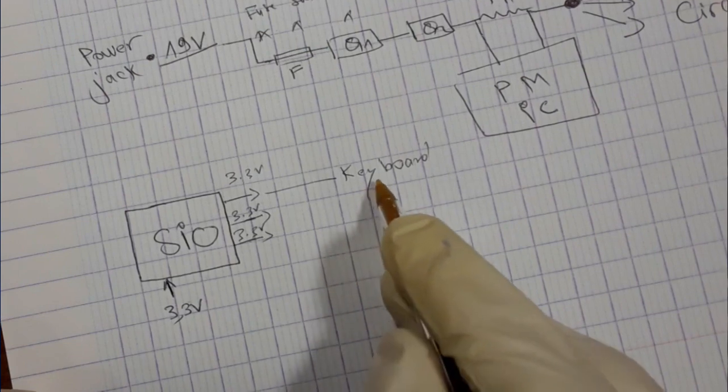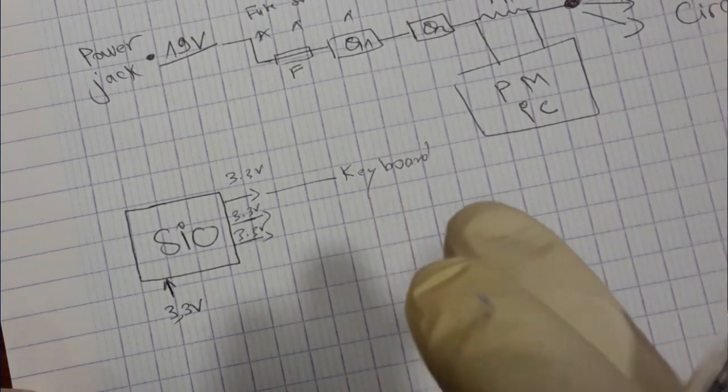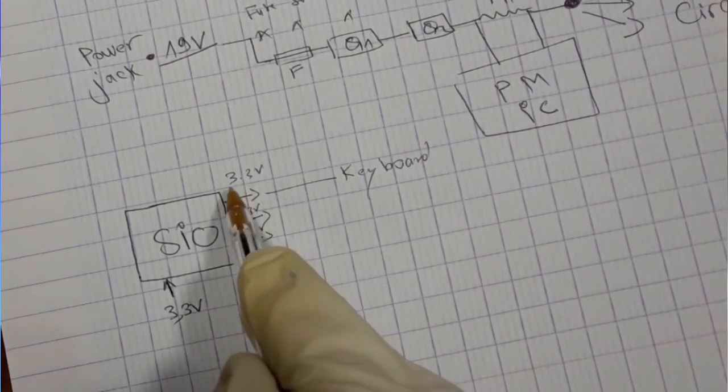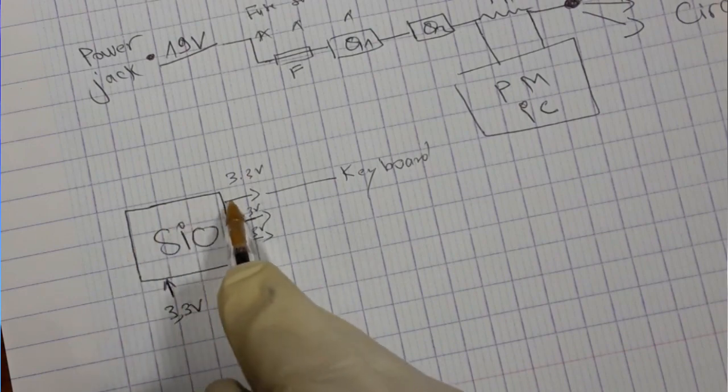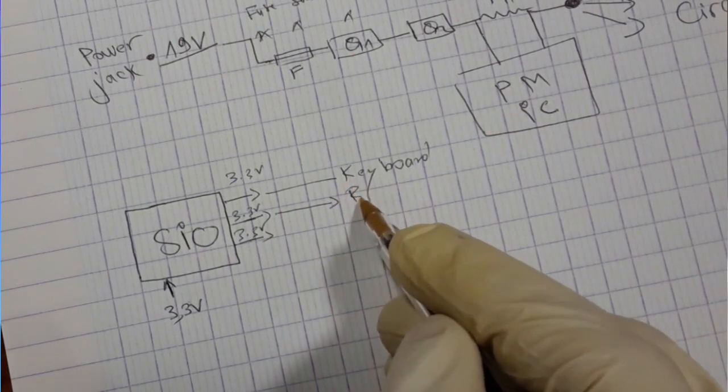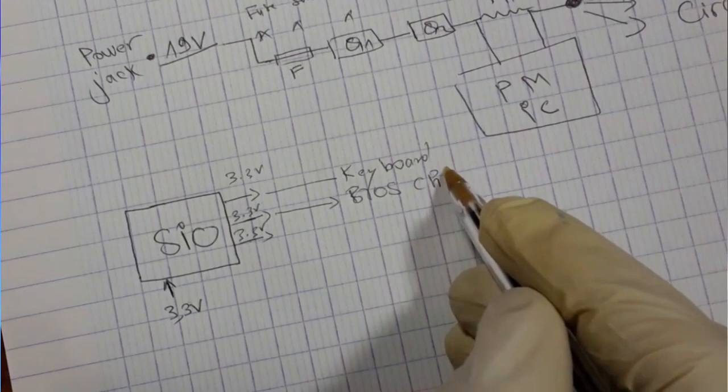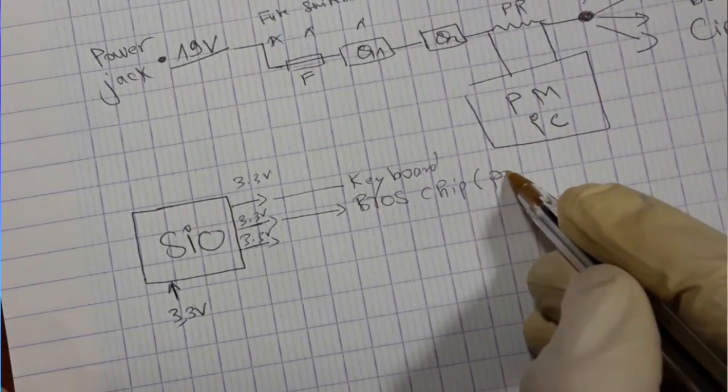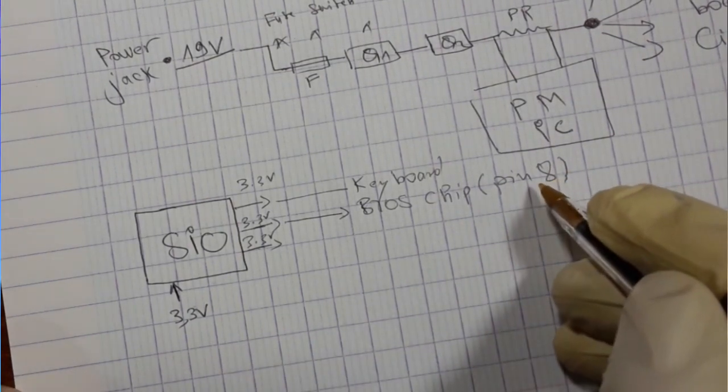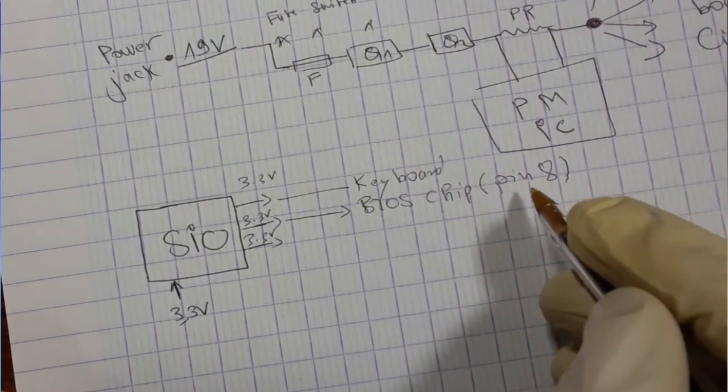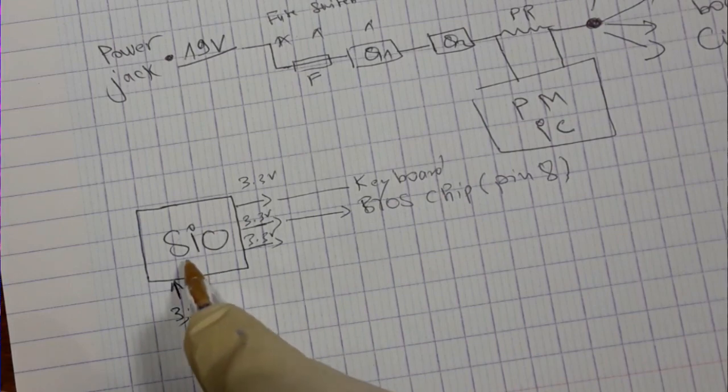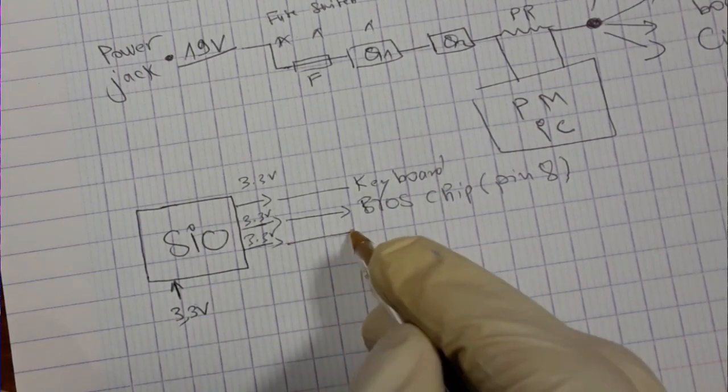The super I/O gives 3.3 volts to the keyboard. When the computer is in sleep mode, you can just press the keyboard and then the computer will be powered on again. The super I/O gives 3.3 volts to the keyboard, also to the BIOS chip into pin number 8. You can find also in pin number 1 and pin number 5, but pin number 8 is important.